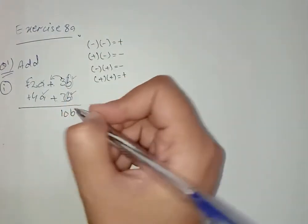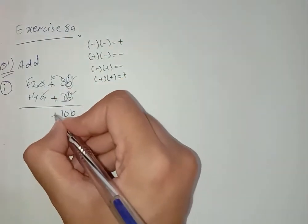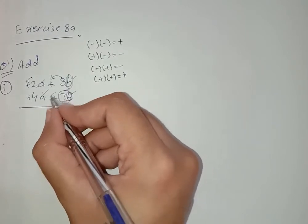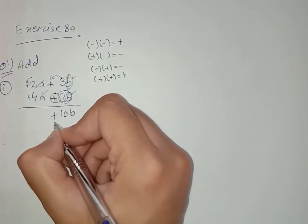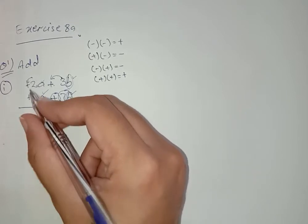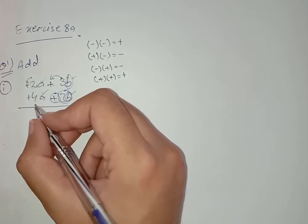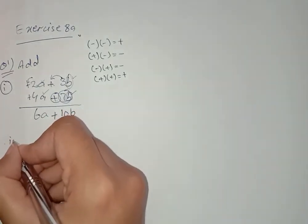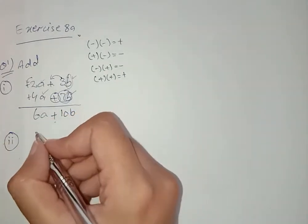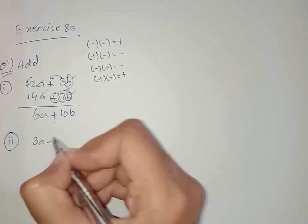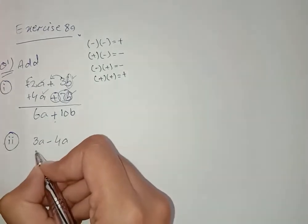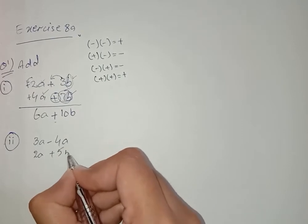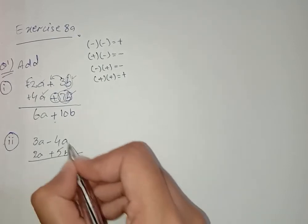Always write the sign of the bigger value. The bigger value is 7 and it has a positive sign, so we write a positive sign. Plus plus is also plus: 4 plus 5 plus 6 — 6a is our answer. Now move towards Part 2, which is 3a minus 4b and 2a plus 5b.